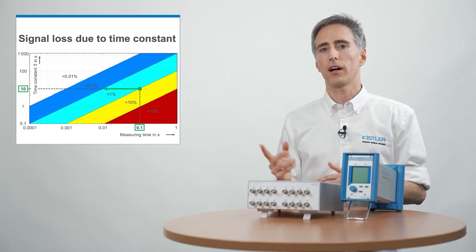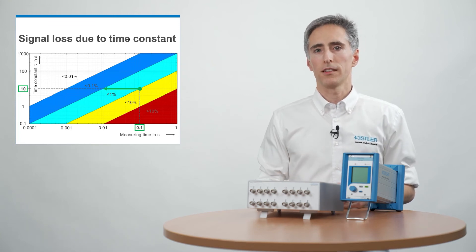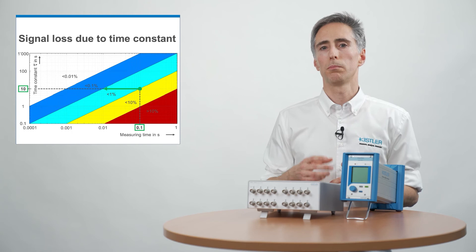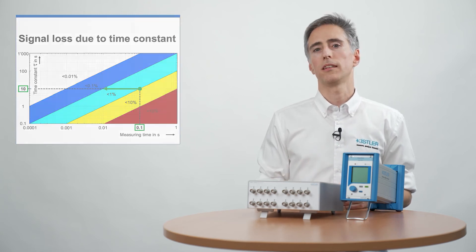In this graph, I'd be in the cyan area. If my amplifier offers a 10 seconds time constant, I can measure up to 0.1 second and my signal loss is still below 1%.